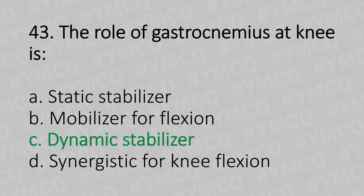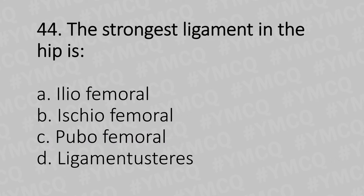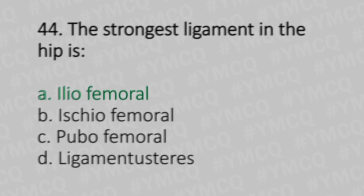Moving to our 44th question. The strongest ligament in the hip is: Option A: Iliofemoral. Option B: Ischiofemoral. Option C: Pubofemoral. Option D: Ligamentum teres. And the answer is Option A: Iliofemoral.